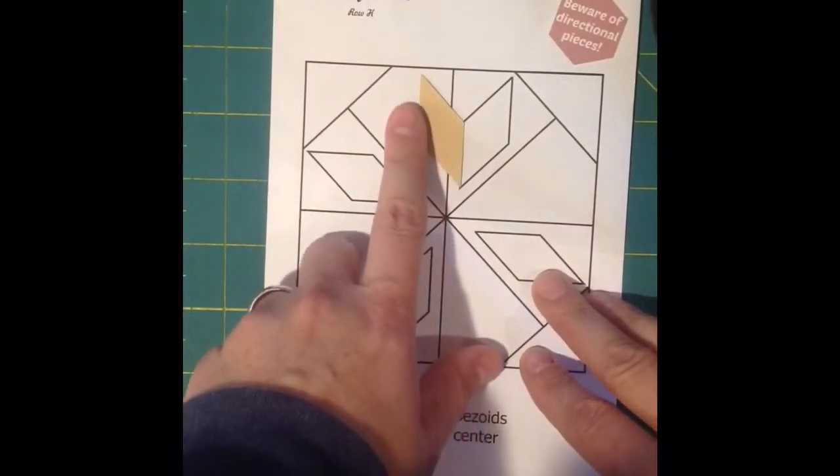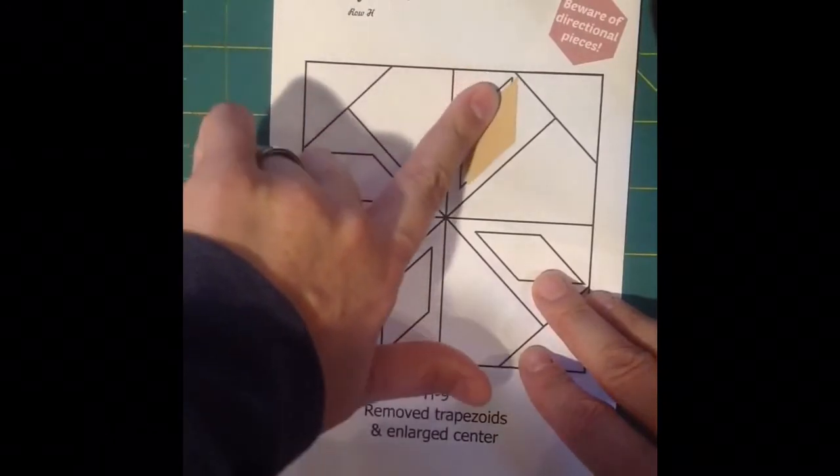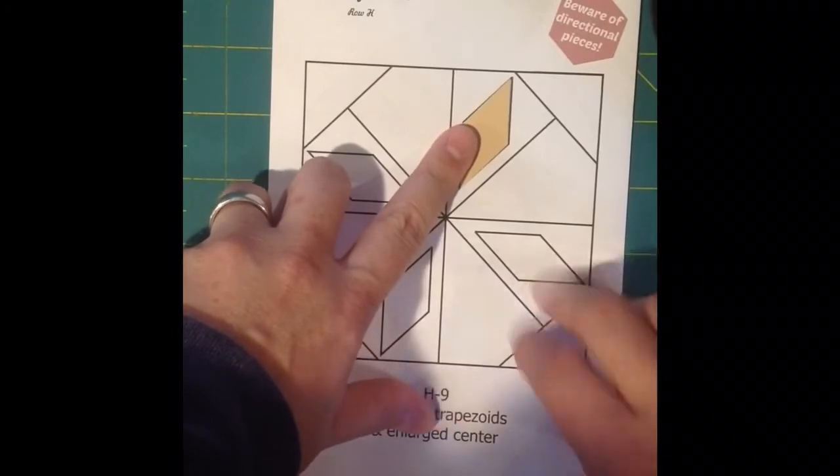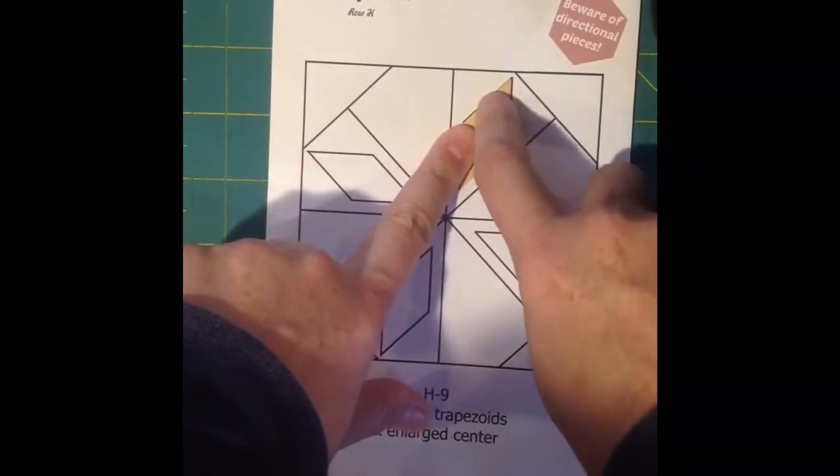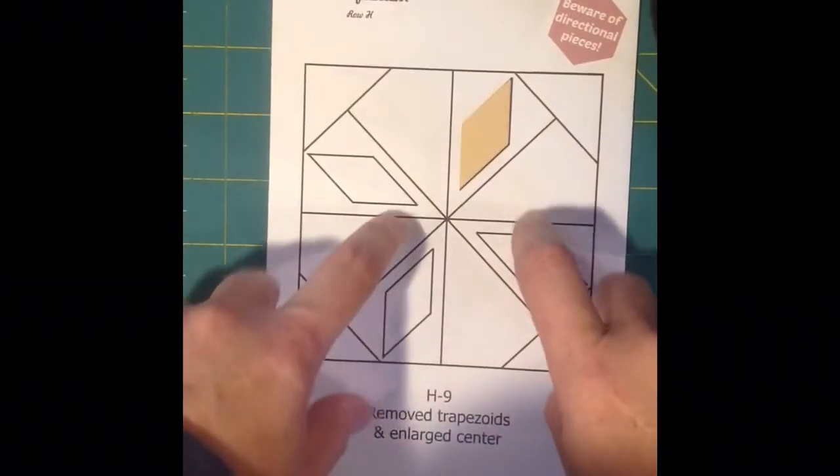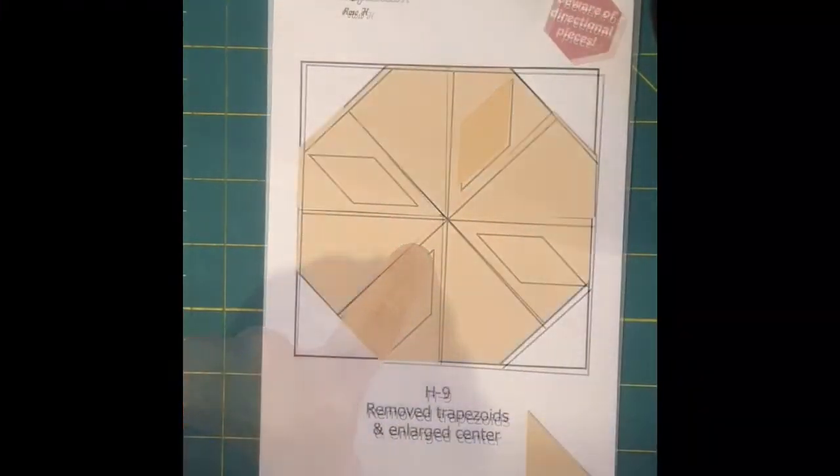So just when you're looking at your fabric, this is why labeling matters. So I'll put an arrow to whatever point goes to the outside or the inside. Whatever I'm going to label it, I'm going to label it the same on this paper.